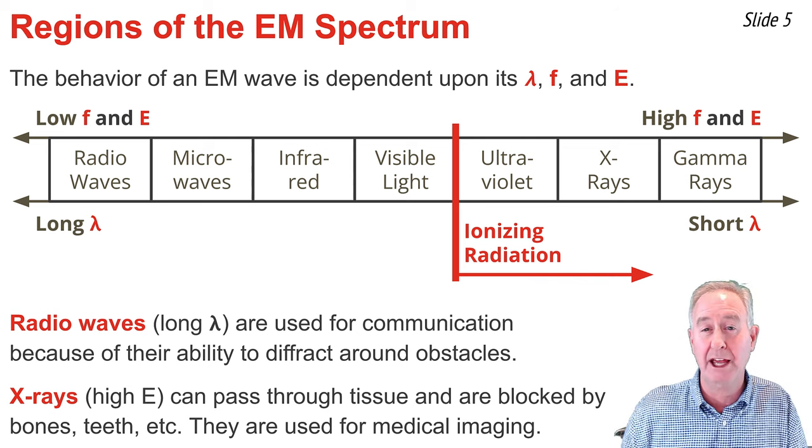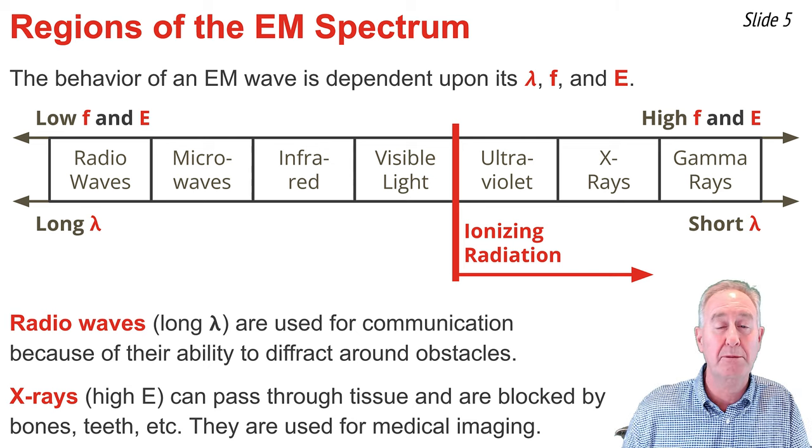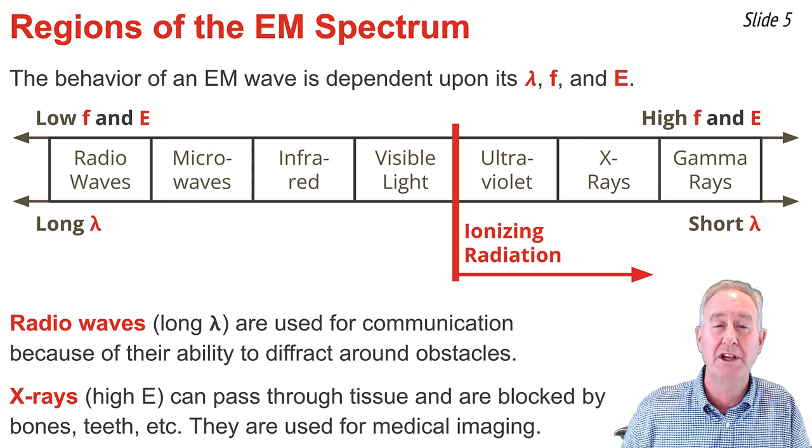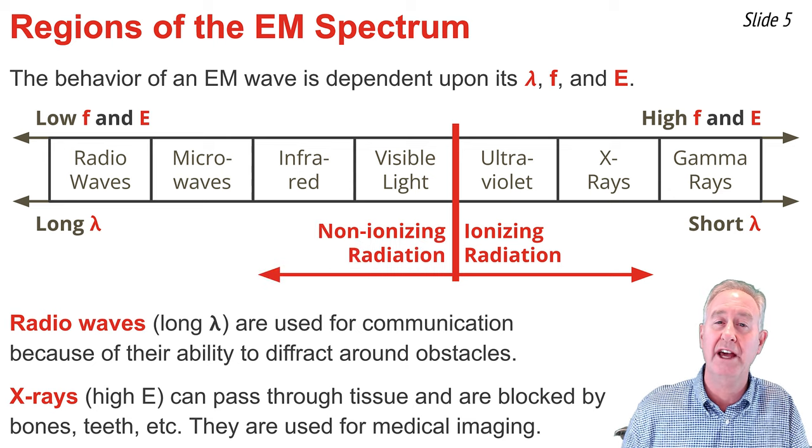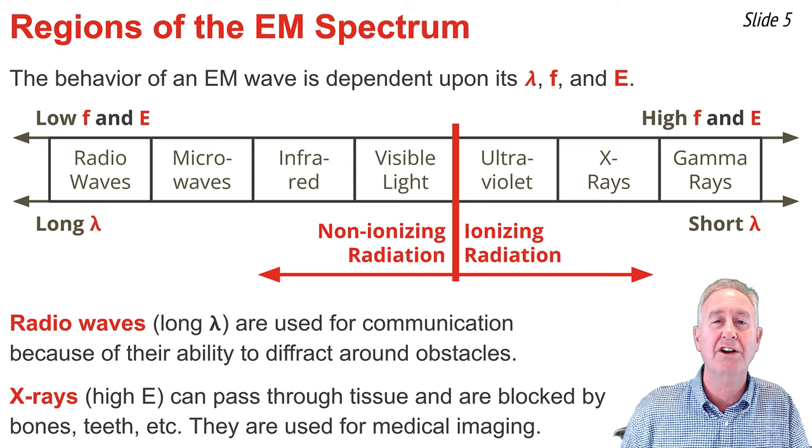As such, they can do damage to the cells of our body and even the DNA and genetic material of our body, thus causing the potential for mutations. On the other hand, visible light and all the regions to the left and lower frequency and energy of visible light are considered non-ionizing forms of radiation.